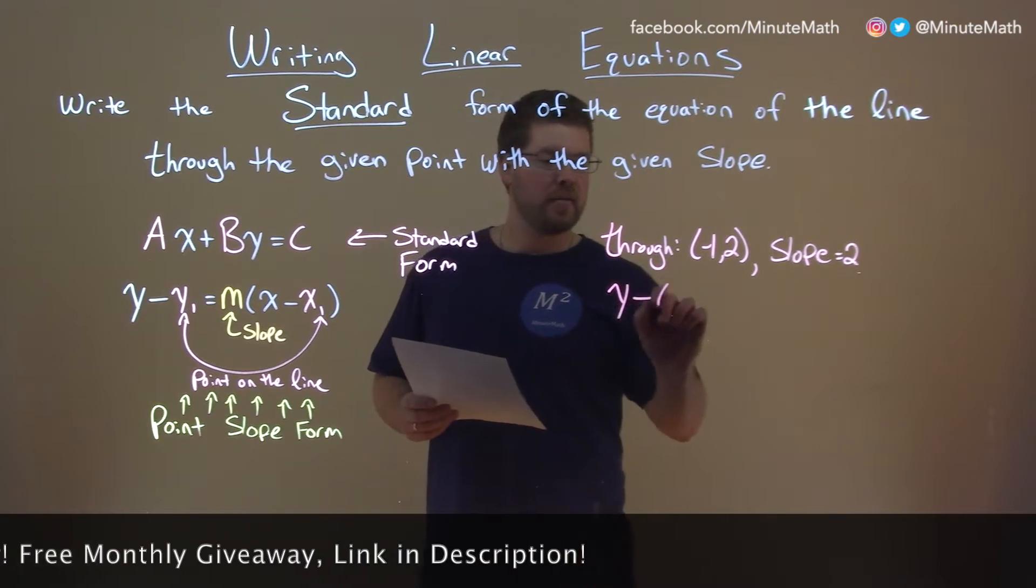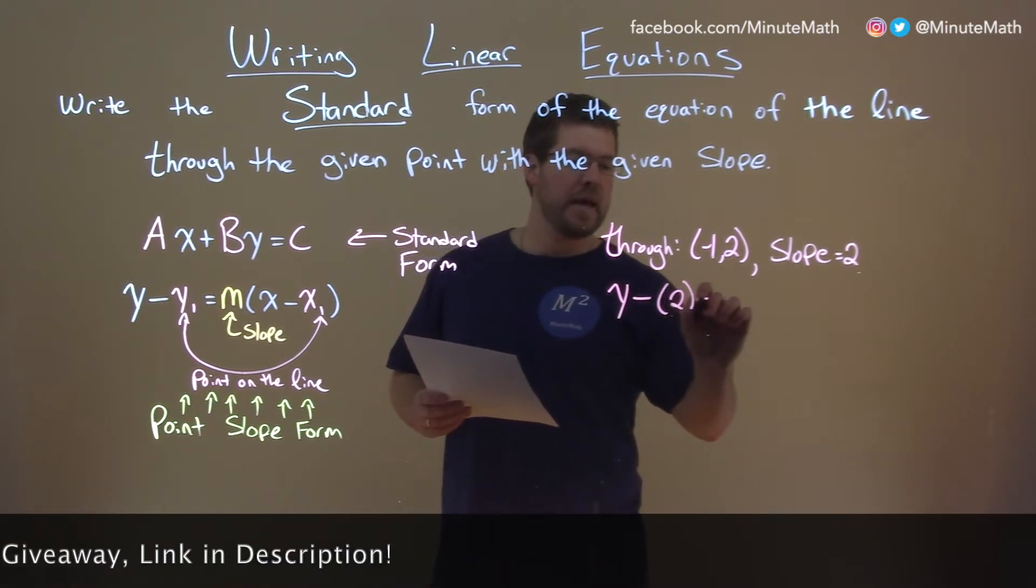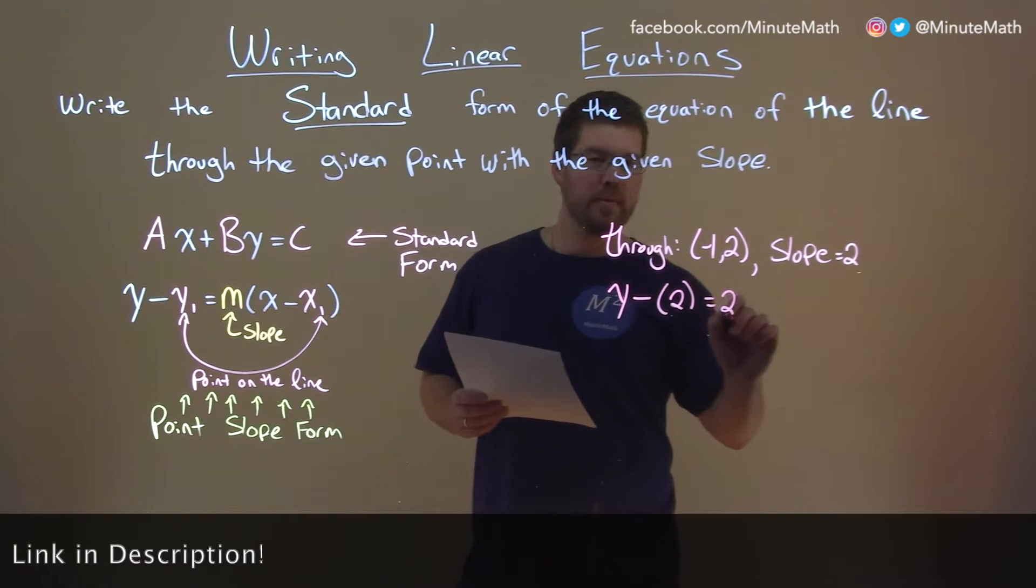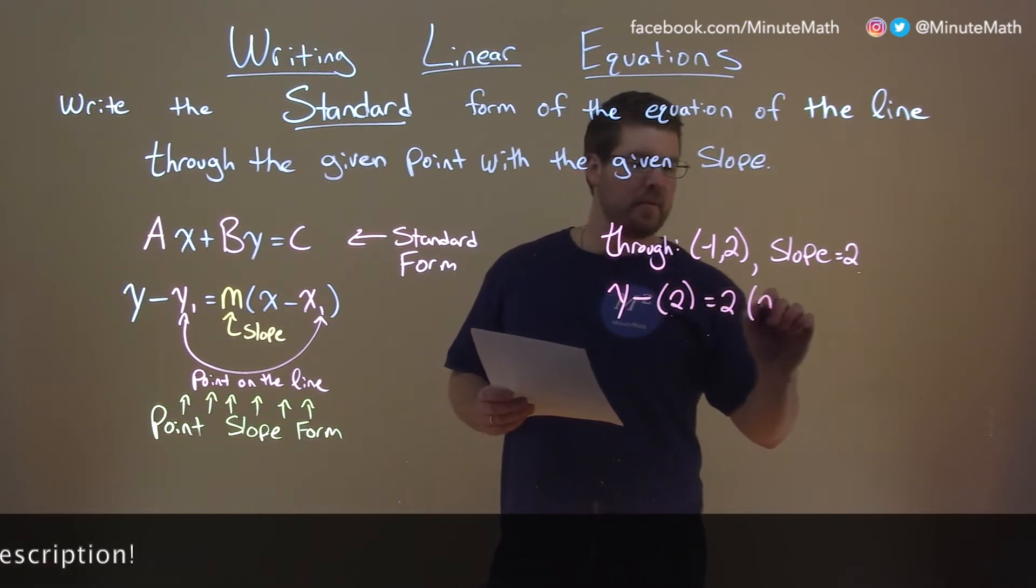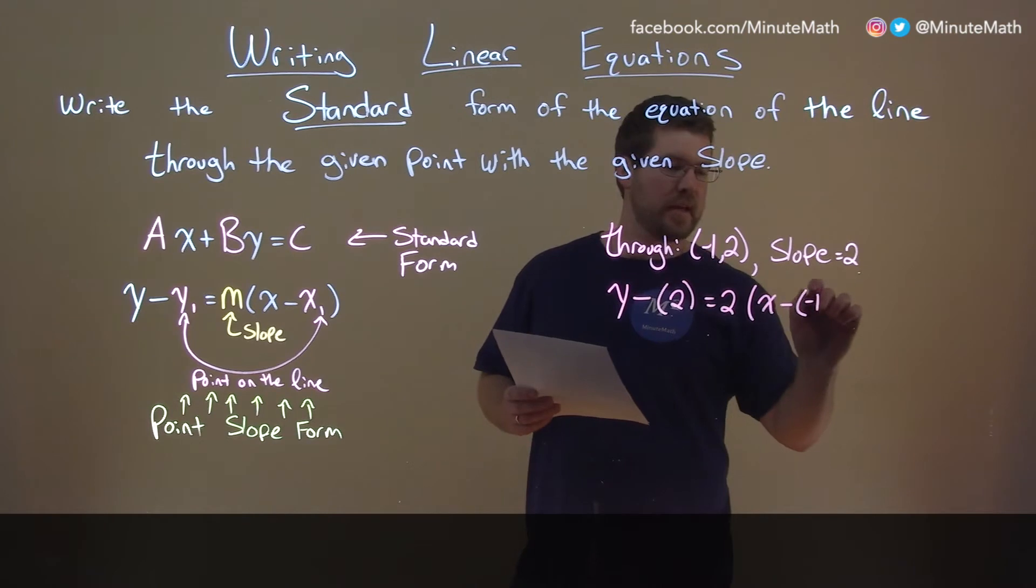So y minus our y1, y-coordinate 2, equals slope 2, which is the m-value, times x minus x1, which is negative 1.